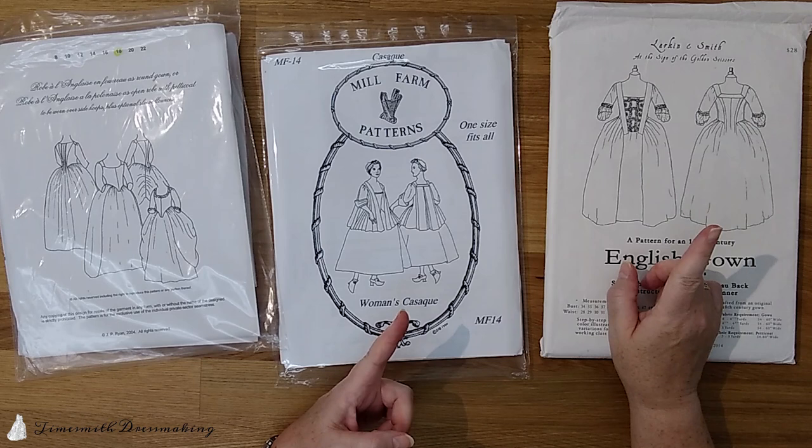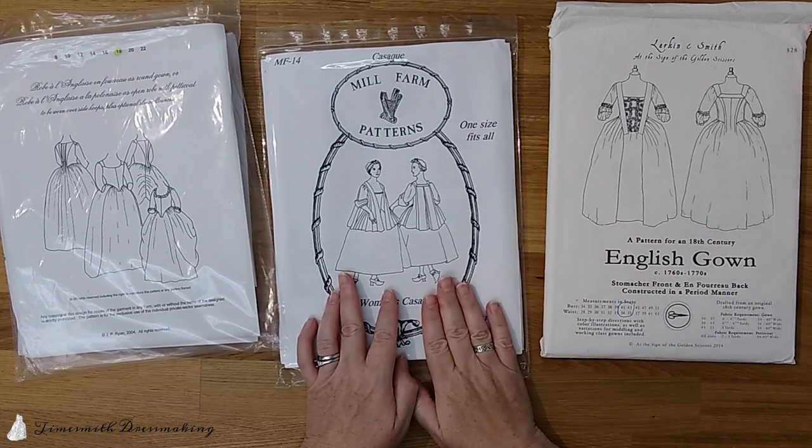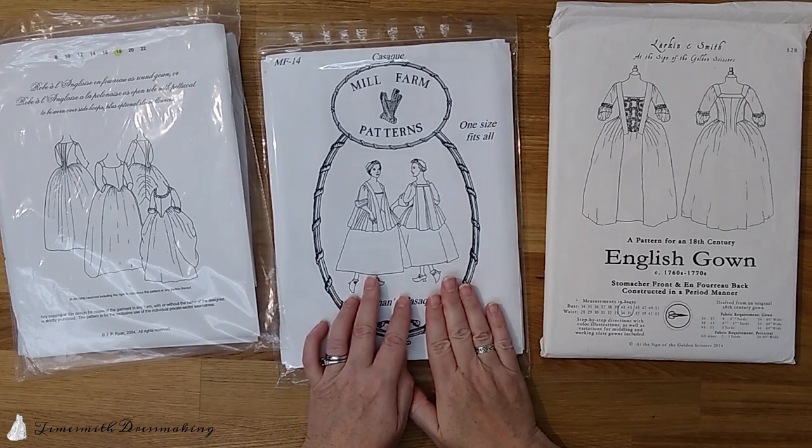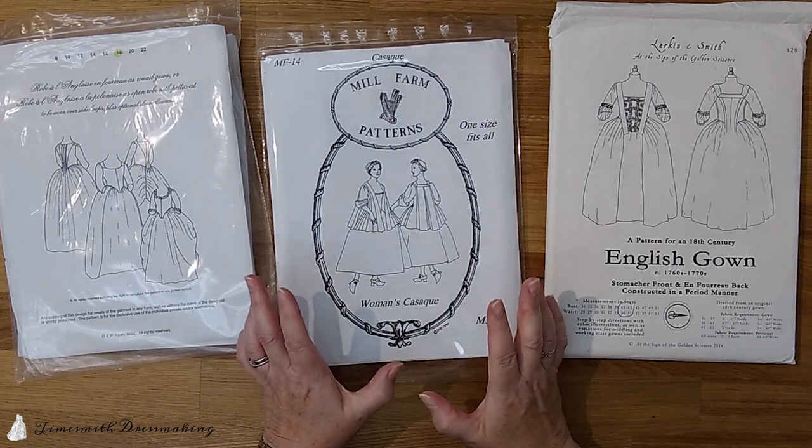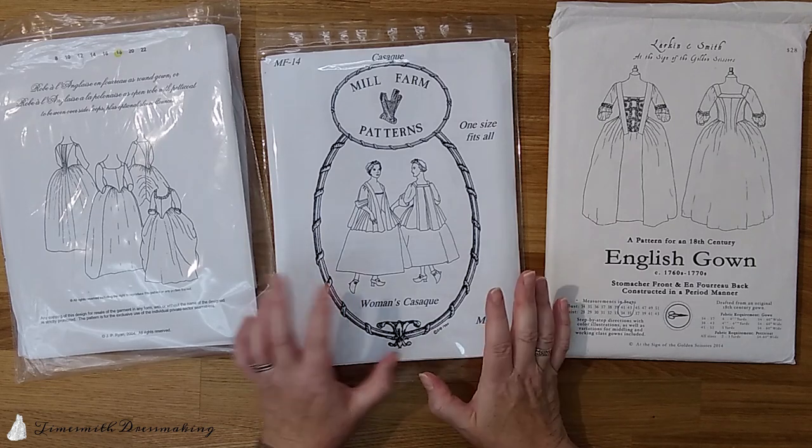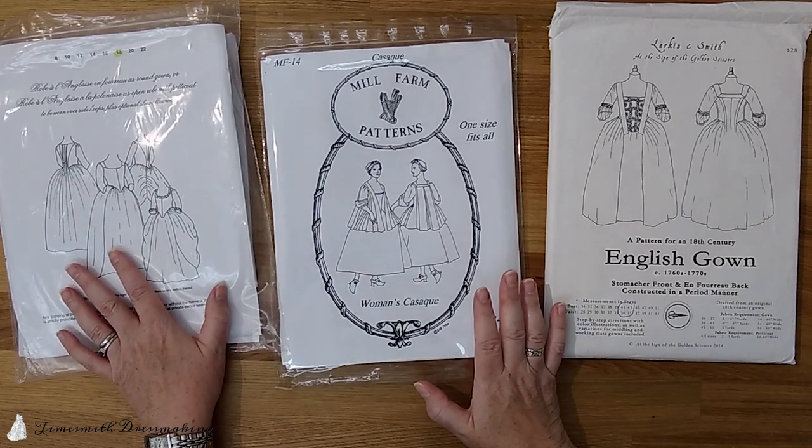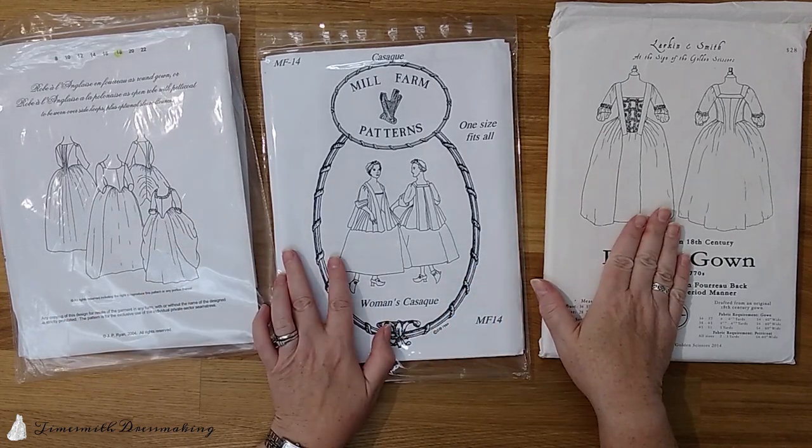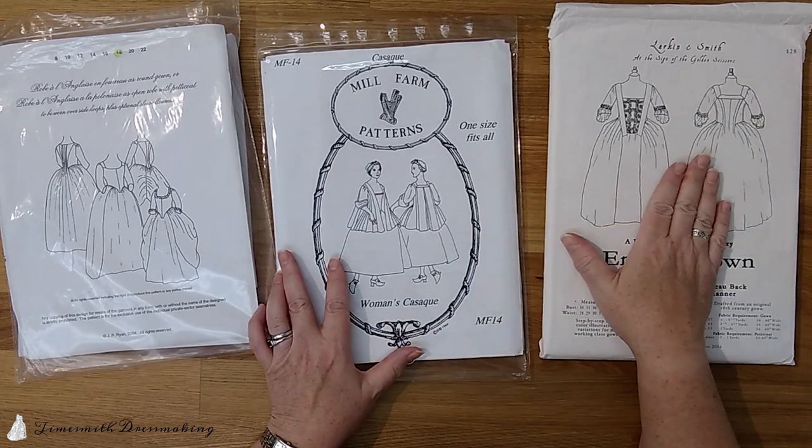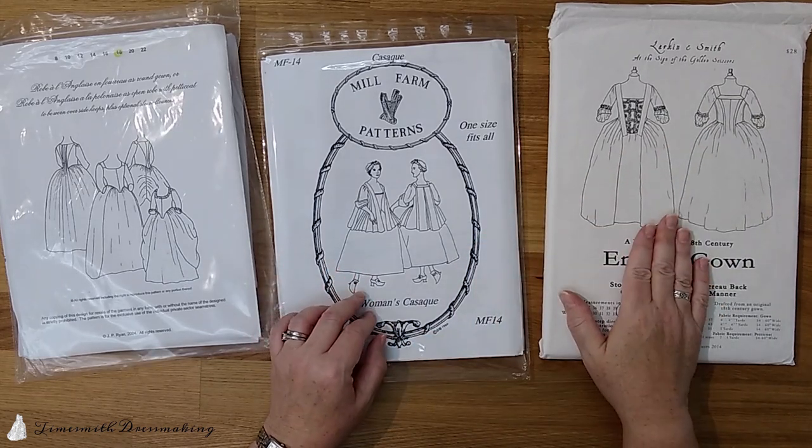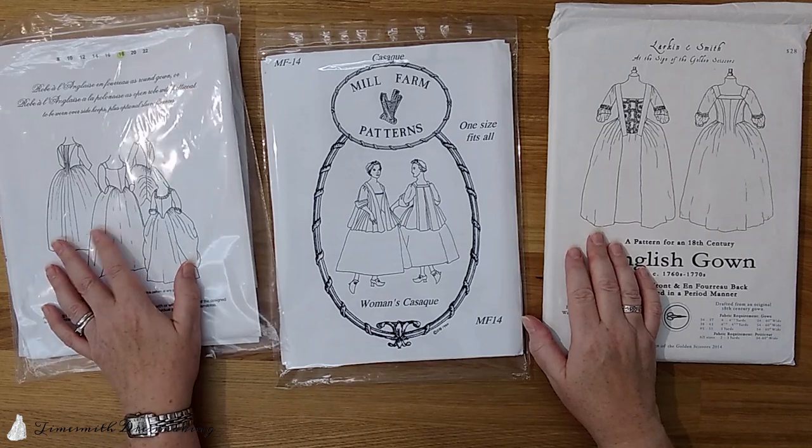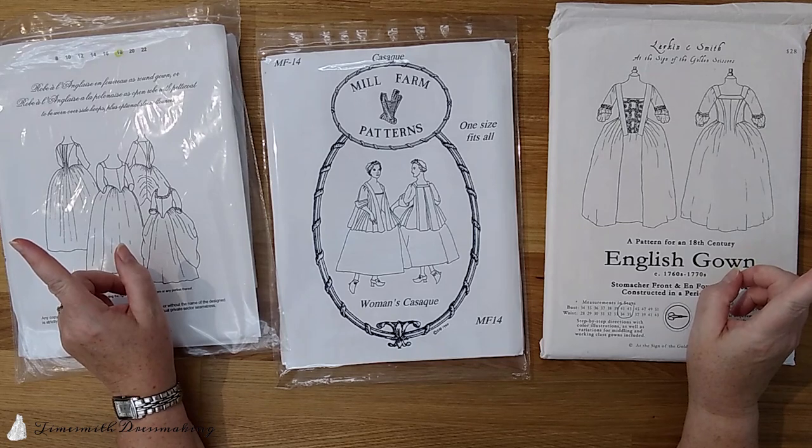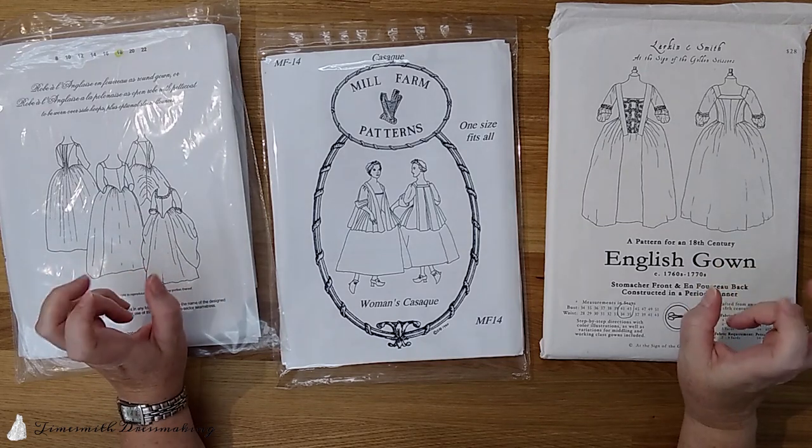And then guess what? You'll be able to use a Mill Farm pattern with its generally excellent, but much briefer, sparser instructions. If you're hungry for variety, then go back and pick up a JP Ryan pattern to get the pattern pieces. Then use the knowledge you've gained from Larkin and Smith and Mill Farm, maybe even using the bulk of the instructions step-by-step to make those garments too. Once you've done all those, you still want more? On to gridded patterns.